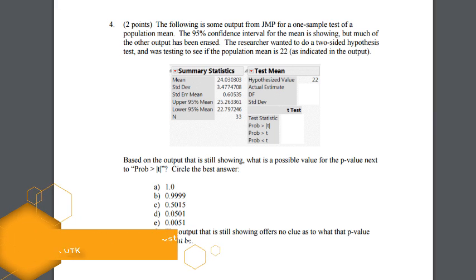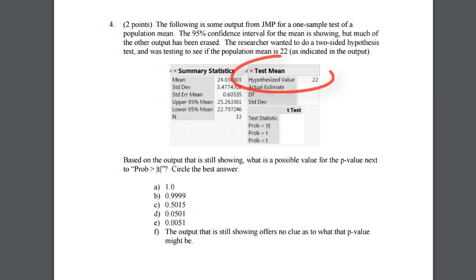So when we look at this output right here the tested mean according to the test mean over there is 22 and that is mu naught. We have a sample mean of 24.03 and we're also given the standard deviation and the standard error and this is the long way of doing the problem.